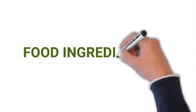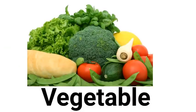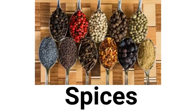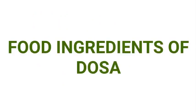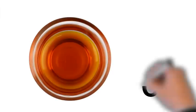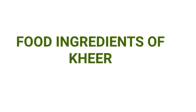For example, vegetable curry is made up of vegetables, water, salt, oil or ghee, spices, etc. Dosa is made up of rice, black gram, water, salt, oil, potato, spices, etc. And kheer is made from rice, milk, sugar, water, salt, ghee, coconut, cardamom, dry fruits, etc.